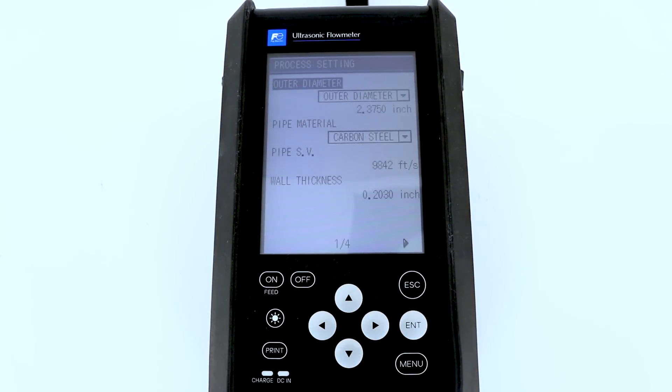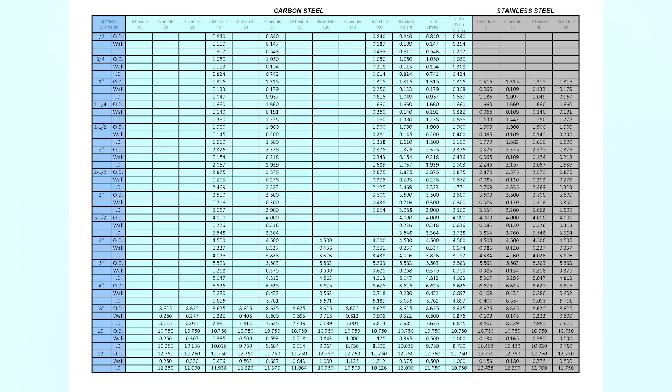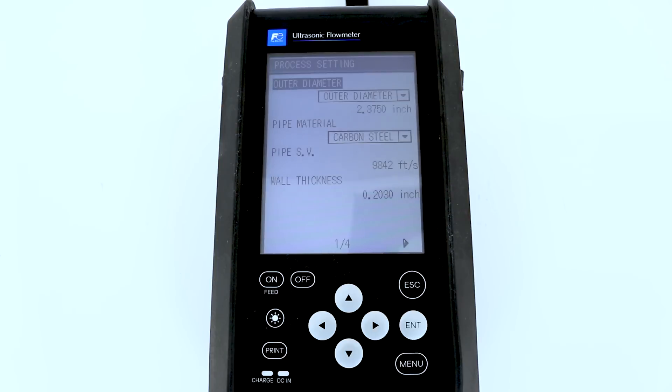And now we will need to put pipe information in. This is most important. If you do not have the correct pipe information, you will not get a good answer. You can refer to the ANSI pipe chart book, which is enclosed in the carrying case of the flow meter. Or you can always go to our website and you can download the same chart. And last resort, take a tape measure, wrap it around the pipe outside diameter, divide it by 3.14, which is pi. Then you will get the pipe outside diameter.